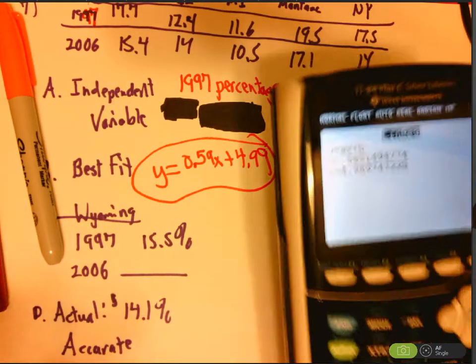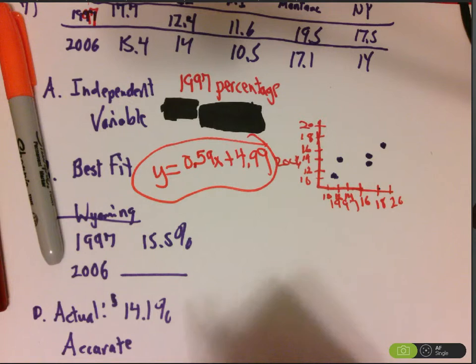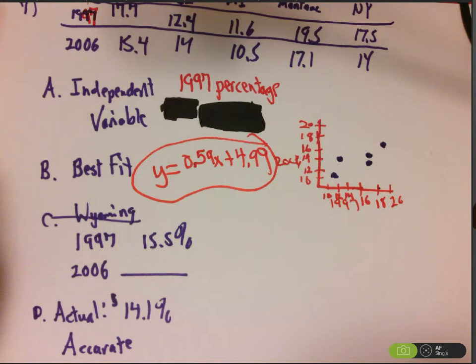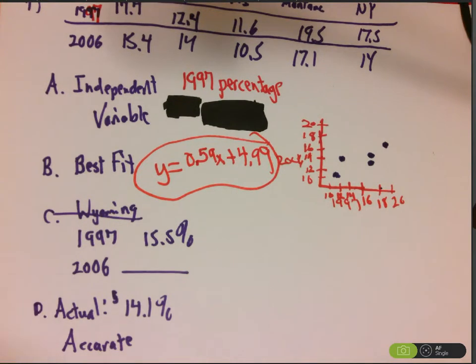So you can see there's some bit of positive correlation. So as the years go on, the percentage of health insurance is getting a little bit better, let's say. Now, in part C, they want me to use that information to create a prediction.